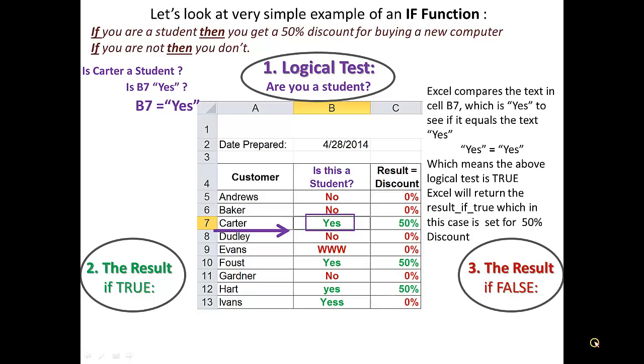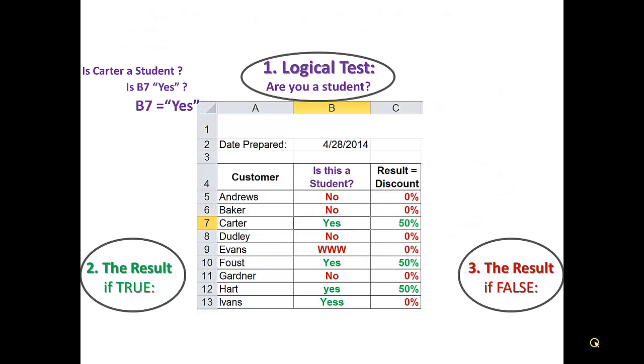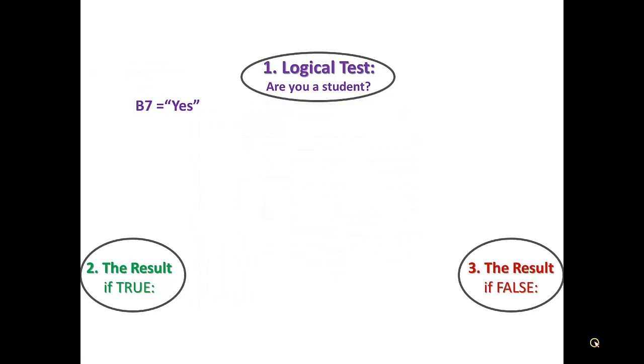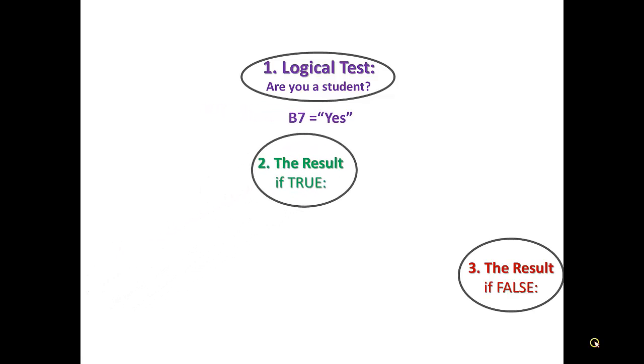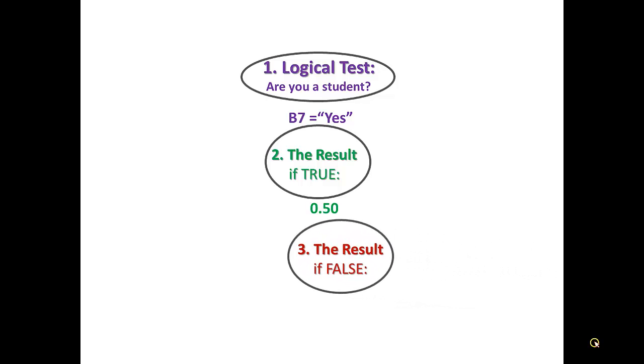And now let us keep only the essential in front of us and clear the verbiage. And the Excel spreadsheet. And watch everything come into place. If B7 equals yes, the result, if true, is 0.5. The result, if false, is 0. This is the bare bones of the IF function.